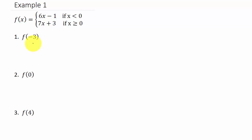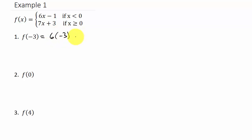Let's look at f of negative 3. You can see that negative 3 is less than 0, so we plug negative 3 in for x into 6x minus 1. That gives us 6 times negative 3 minus 1, which is negative 18 minus 1, which is negative 19.